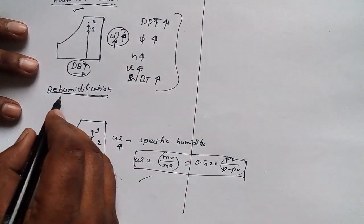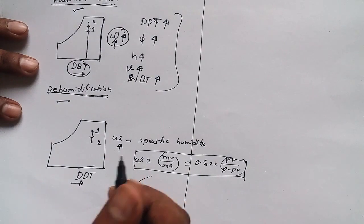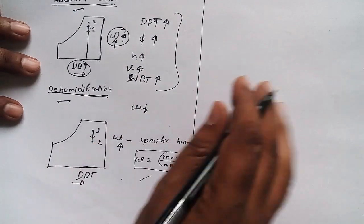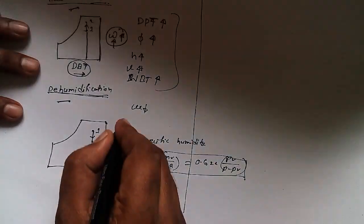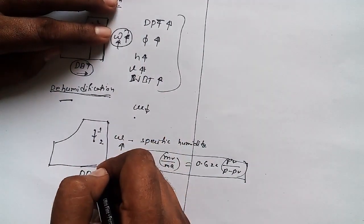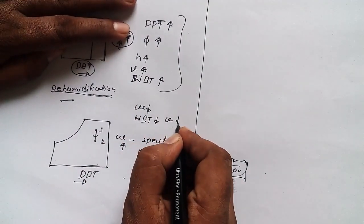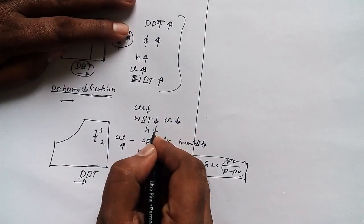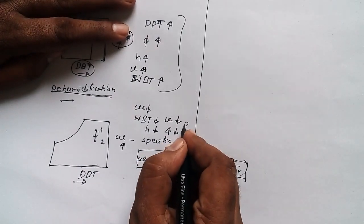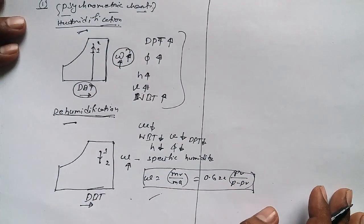In the case of dehumidification, we are decreasing specific humidity while DBT is constant. Wet bulb temperature will decrease, specific volume will decrease, enthalpy will decrease, relative humidity will decrease, and dew point temperature will also decrease.